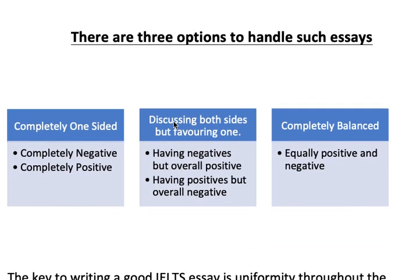The first option is completely one-sided. The second option is discussing both sides but favouring one — that means you are more in favour of positive or more in favour of the negative, but you have points for the other side also, which are fewer. And then there is a completely balanced essay in which you will say that it is equally a positive and negative development.